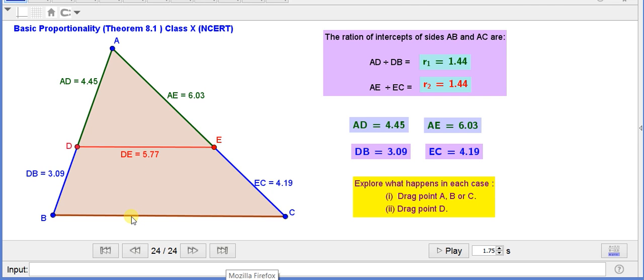Now here, the value of AD is 4.45 and DB is 3.09. Similarly, AE is equal to 6.03 and EC is equal to 4.19.